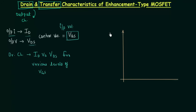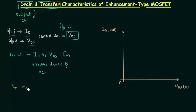The y-axis is for the drain current ID in milliamps and the x-axis is for voltage VDS in volts. This is the origin. In the case of a MOSFET, the threshold voltage VT is already given, and not only the threshold voltage but also the constant K is given. VT and K are already given and now we will discuss case number one.